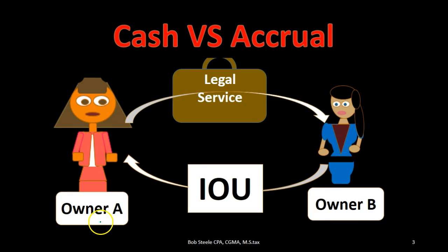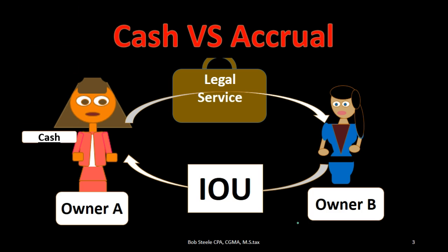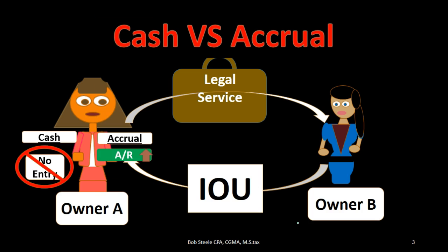We can give an example where we have Owner A and Owner B. Owner A is providing legal services to Owner B, and Owner B has not yet paid — basically an invoice has gone out and Owner B is giving an IOU. No cash has changed hands, so under a cash basis for Owner A no entry happened. But under an accrual basis, something did happen: we got an IOU and we earned the revenue. The key point is we recognize revenue at the point in time the work was done, not when cash is received.